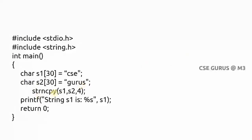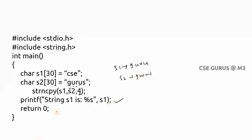Now coming to strncpy — instead of copying all characters from s2, I want to copy only some number of characters, for example four characters in this example. If you want to copy all, use strcpy; if you want to copy only the first n characters, use strncpy. So s1 will consist of only the first four characters, that is 'guru'. S2 consists of 'gurus', so printing s1 gives the answer 'guru'.